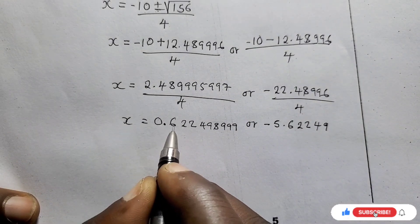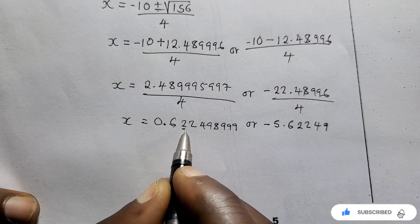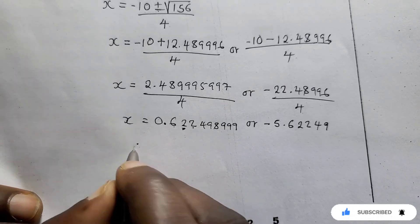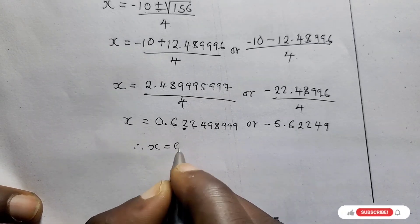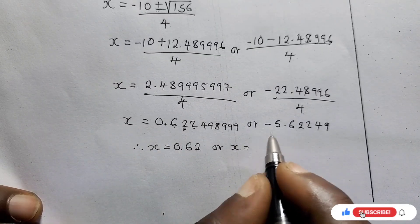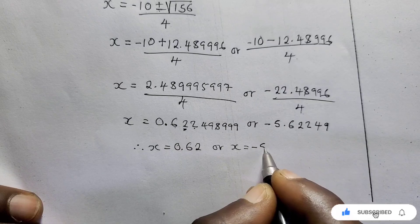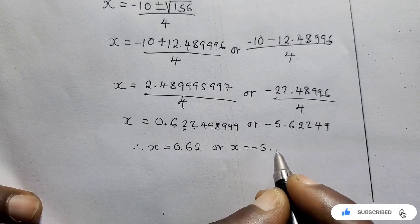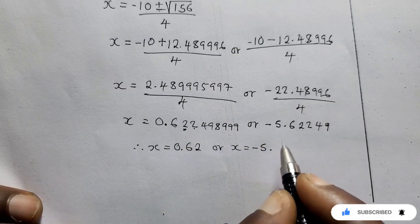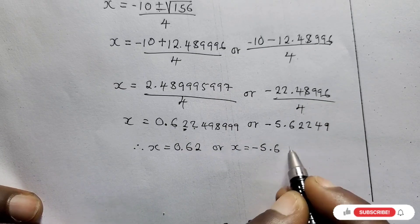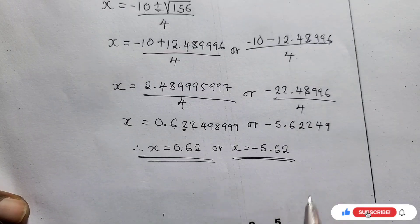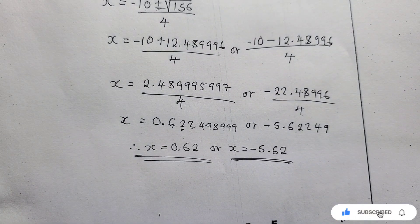So after a decimal point here we have 1, 2 numbers. So up to here, and this one is less than 5, so I am not going to add 1 to this. So therefore X equals 0.62 or X equals negative 5 point, so after this decimal point we have 6, 2. And these are the roots to the equation we have just solved.